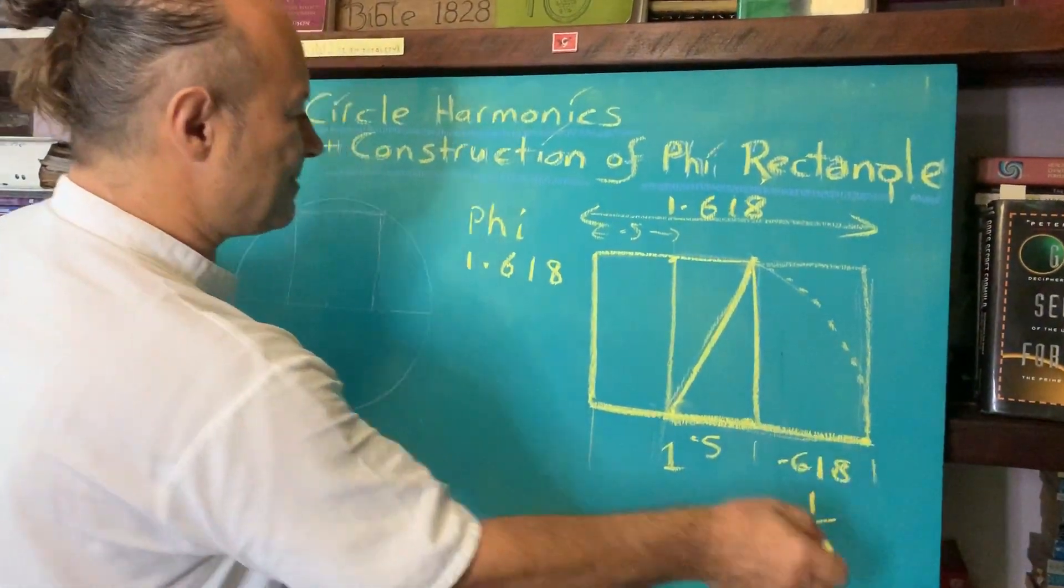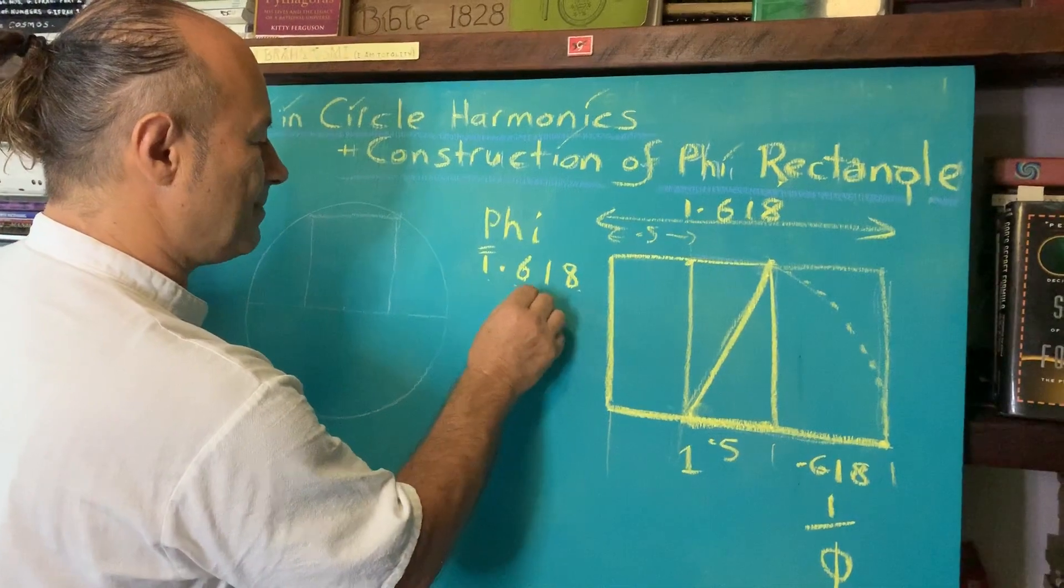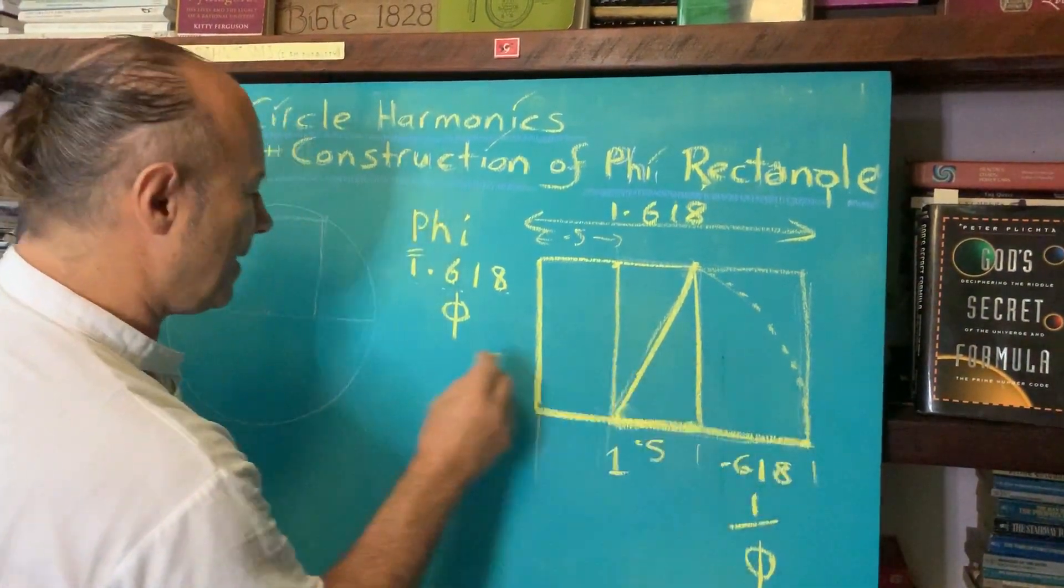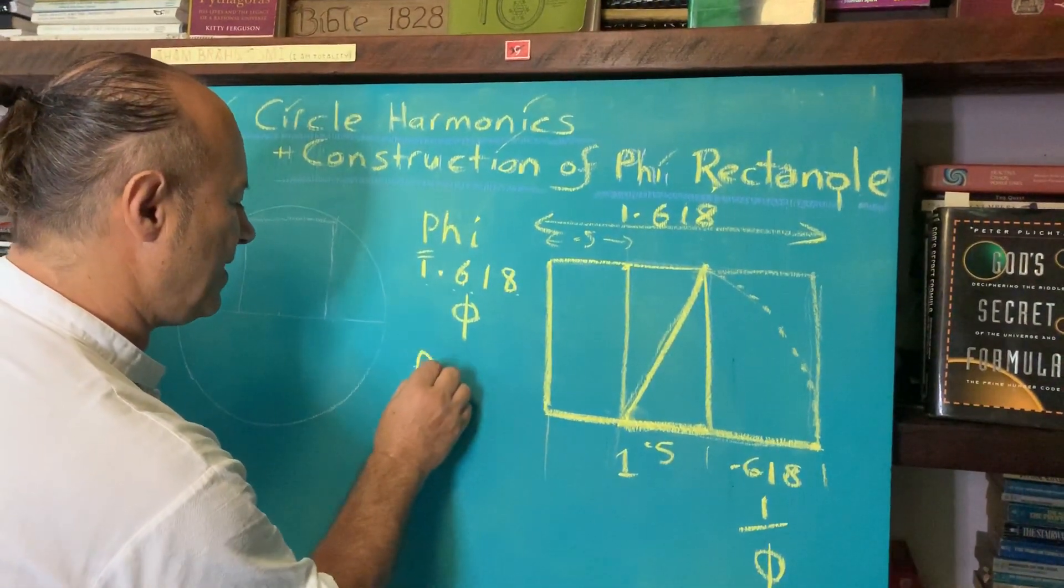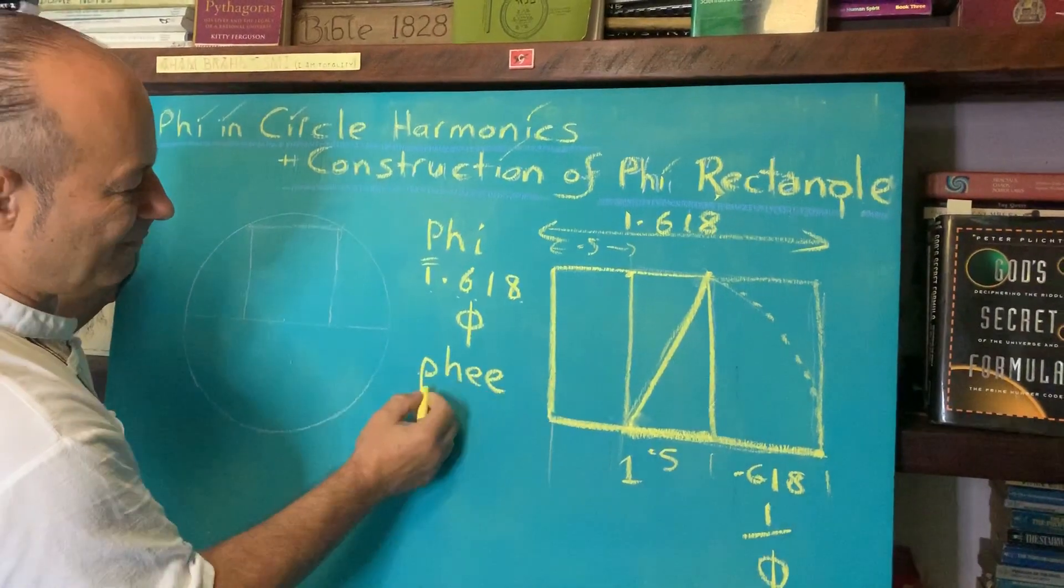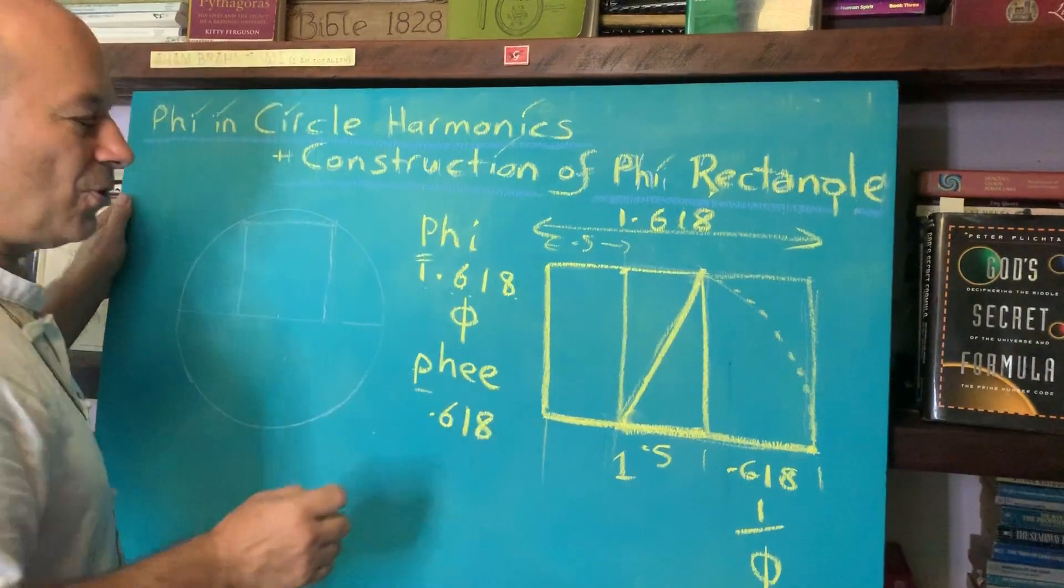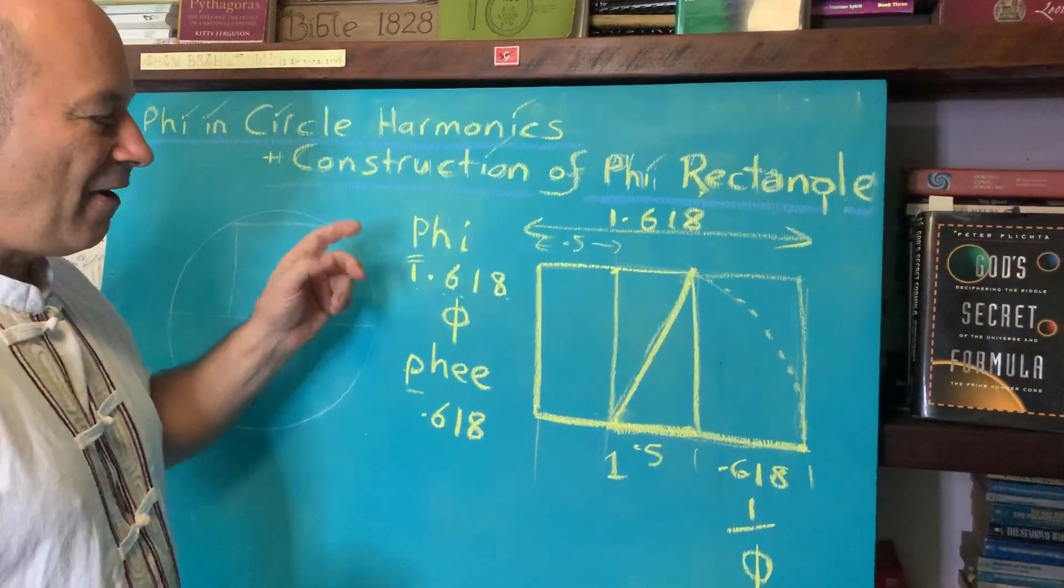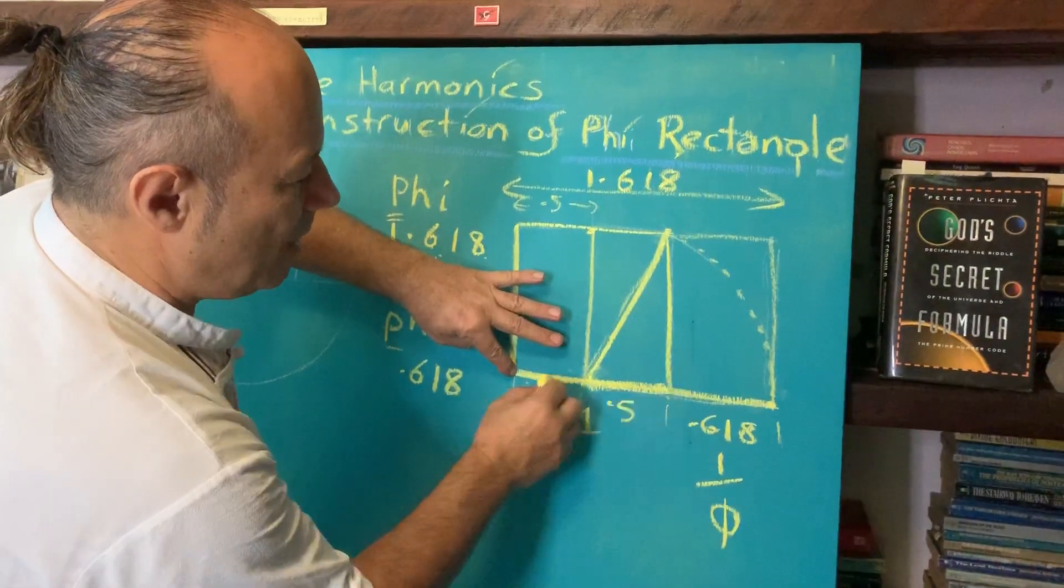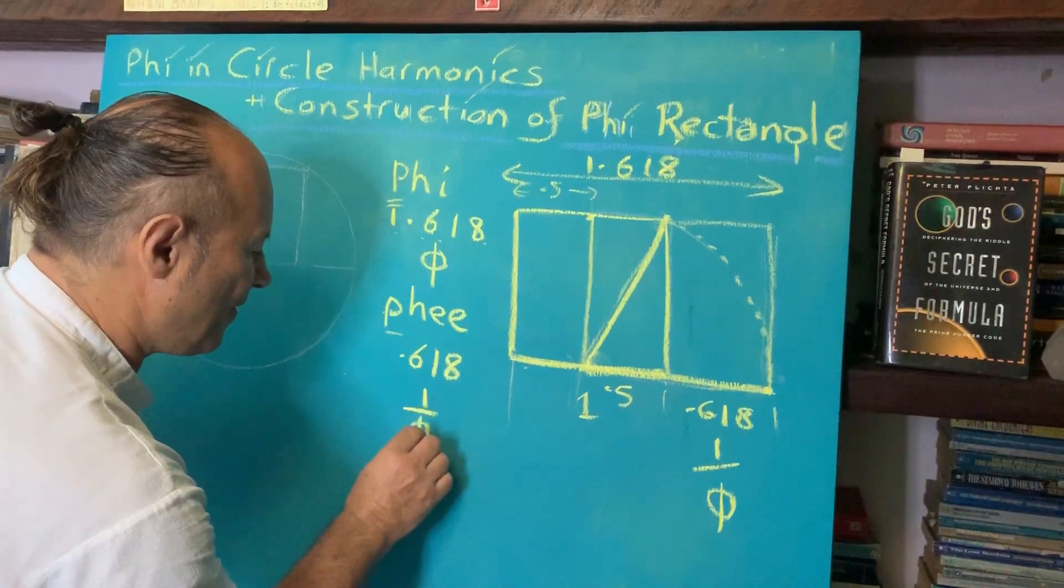We need to give this a name. Phi with a capital P is 1.618. But the 0.618, this little bit here, is called phee, P-H-double-E. I've made up this name for it, and it's a lowercase p. It has a value of 0.618, and it's called the reciprocal of phi—1 over phi.